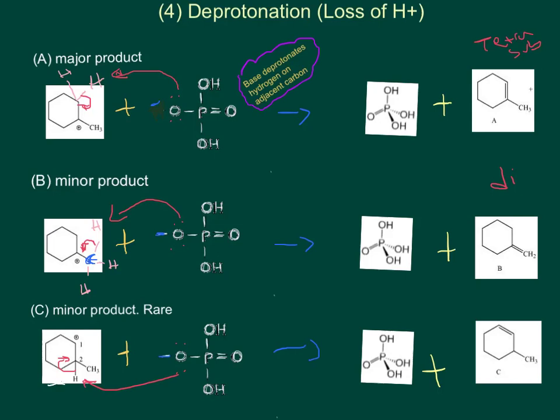So in the end, we see three types of products: from tetrasubstituted, the most stable, to the disubstituted less stable, and also disubstituted but less frequent because it's made before the tertiary carbocation is made. Thus our secondary carbocation would give us this product but less frequently.